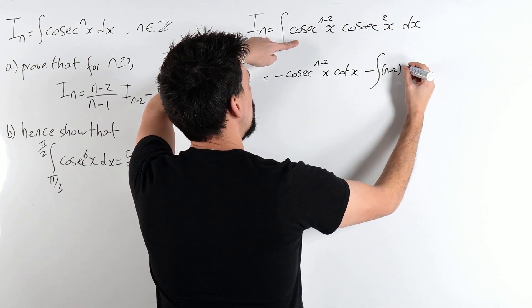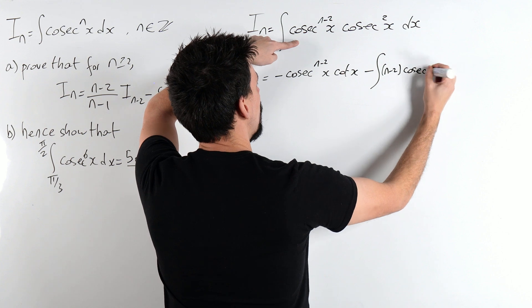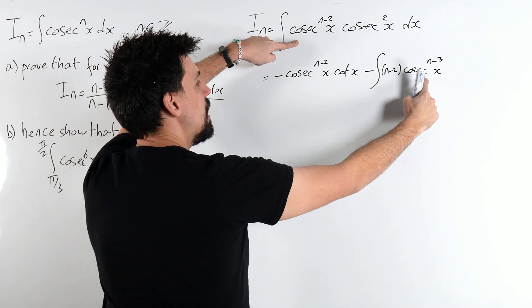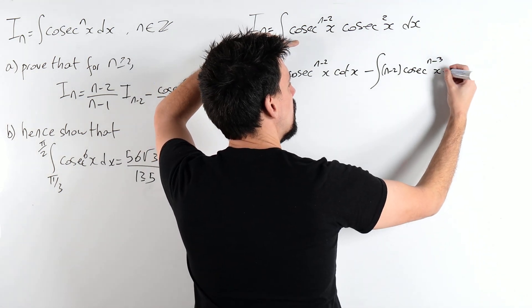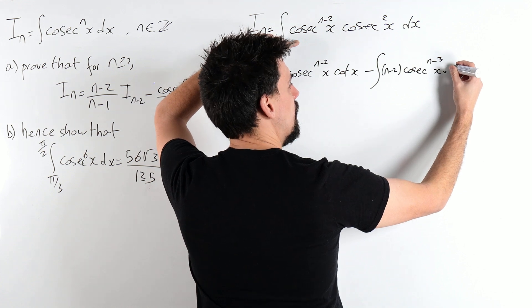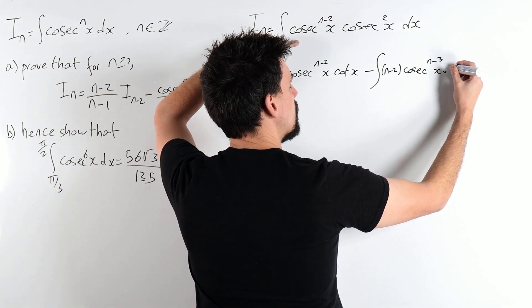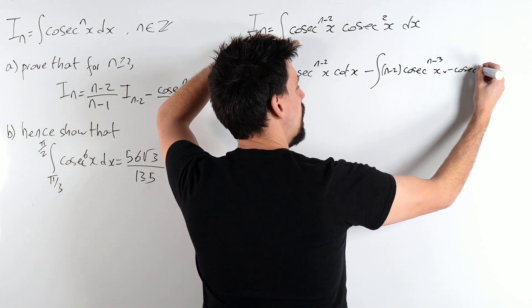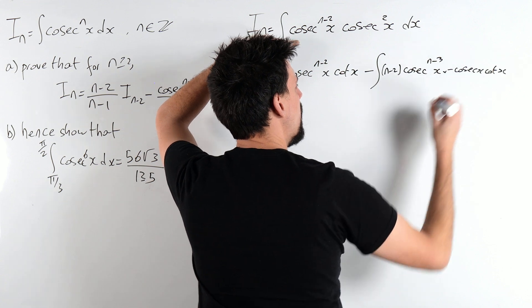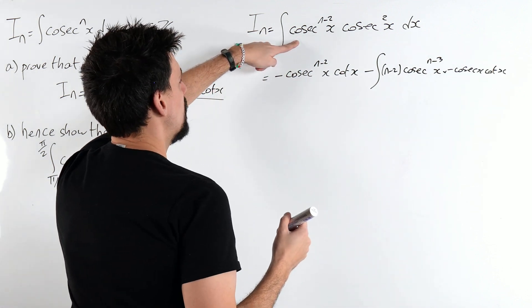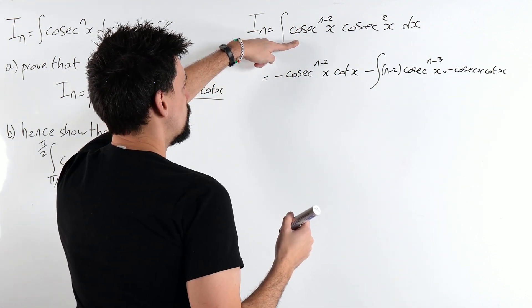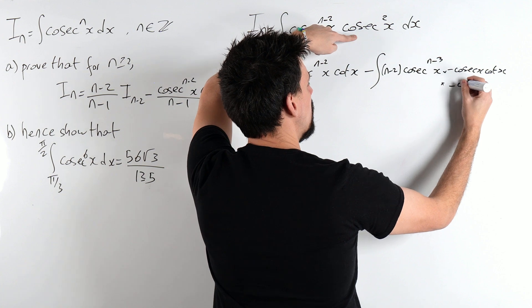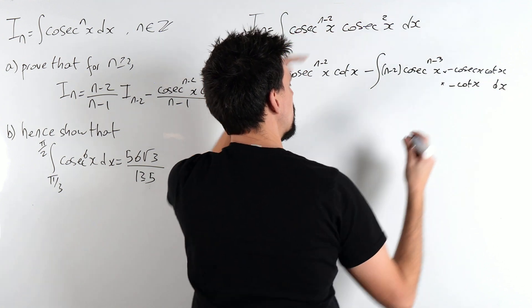I'm going to differentiate n-2 cosec to the n-3 of x. I've got to differentiate cosec, which becomes a minus cosec x cot x. There's a whole lot of stuff going on here. And then I need to integrate that. I'm going to pop it here because we're going to simplify this massively in a second, dx.